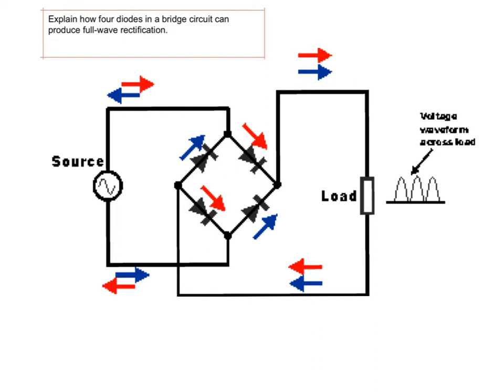For the A-grade work, we now need to explain how the four diodes in the bridge produce full wave rectification. That's what I hope to explain now. Let's consider the source — that's on the left-hand side of the diagram. It's AC electricity; the electricity is going backwards and forwards, as indicated by these arrows here.